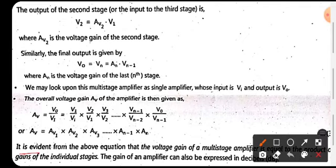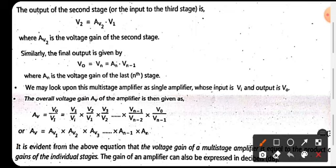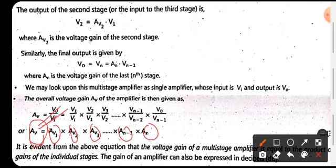It is evident from the above equation that the voltage gain of a multi-stage amplifier is equal to the product of the gains of the individual stages. The gain of the amplifier can also be expressed in decibels. In conclusion, if we connect single stage amplifiers in a multi-stage configuration, the overall gain is the multiplication of each individual single stage gain. In the next video, we will see the coupling of amplifiers — how to connect one stage to the other stage.